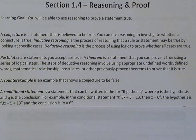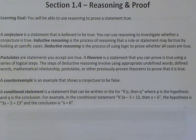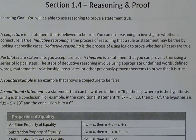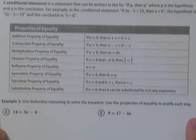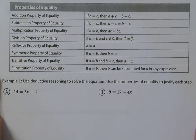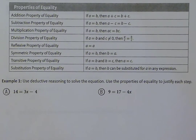Let's jump into our examples. Example one asks us to use deductive reasoning to solve an equation — not just solving, but justifying each step: stating what we did, how we did it, and why we could do that. To do that, we're going to use the properties of equality, which you've hopefully seen before in algebra or pre-algebra.